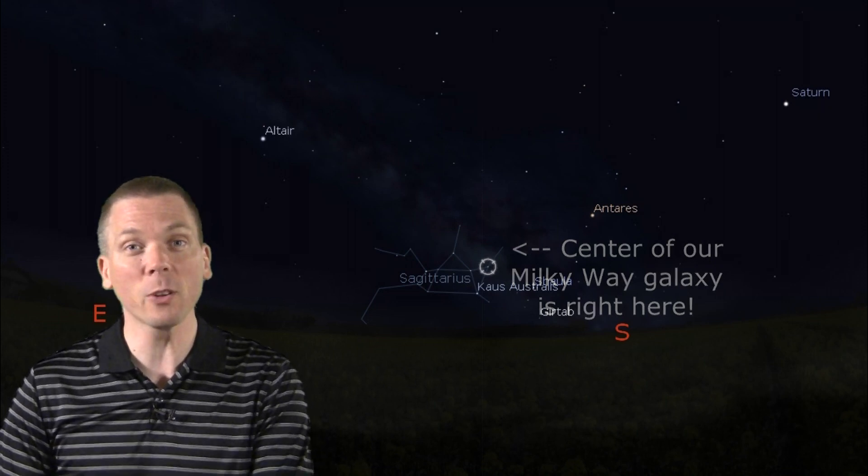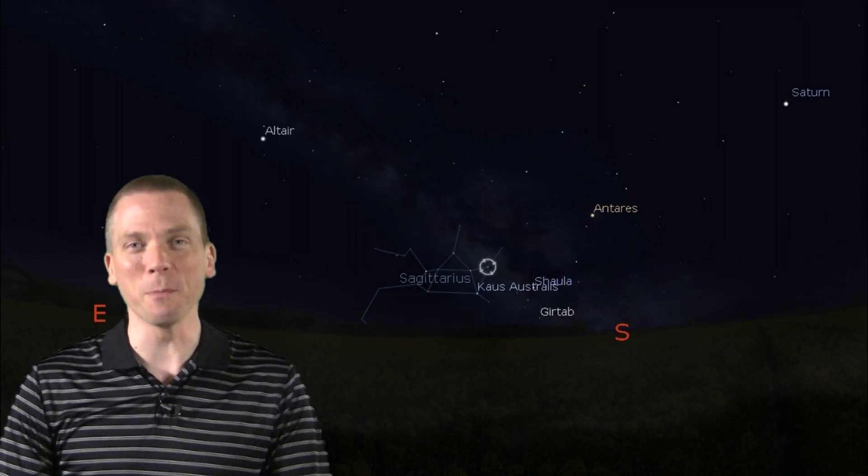Sagittarius is littered with globular clusters, open clusters, and some bright nebula that rival the beauty of Orion's nebula in winter.